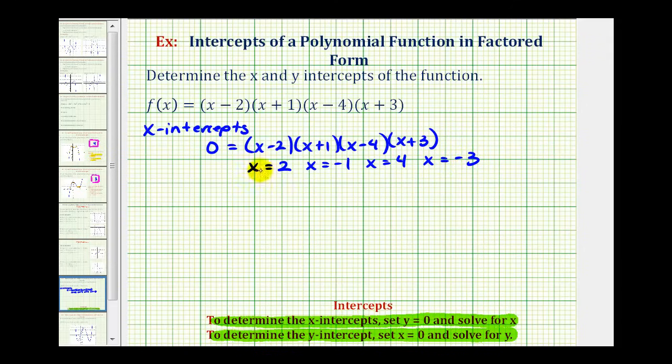Technically, we shouldn't leave it in this form because these equations actually represent vertical lines. So we can say the x intercepts equal two, negative one, four, and negative three.